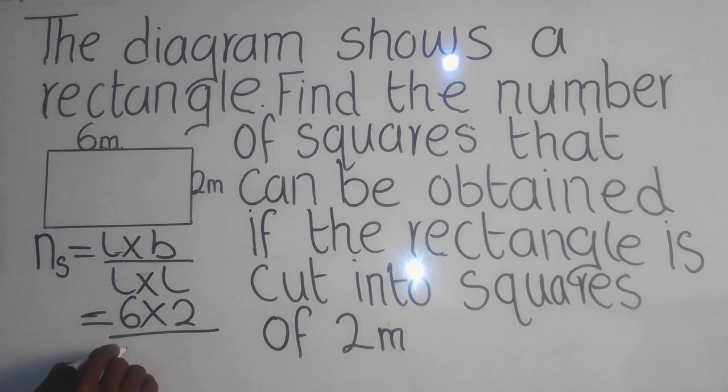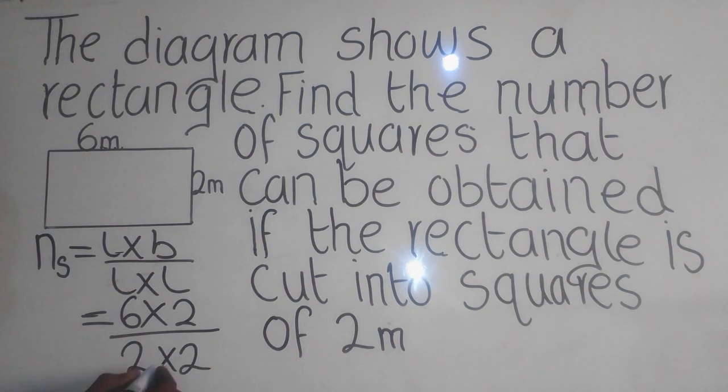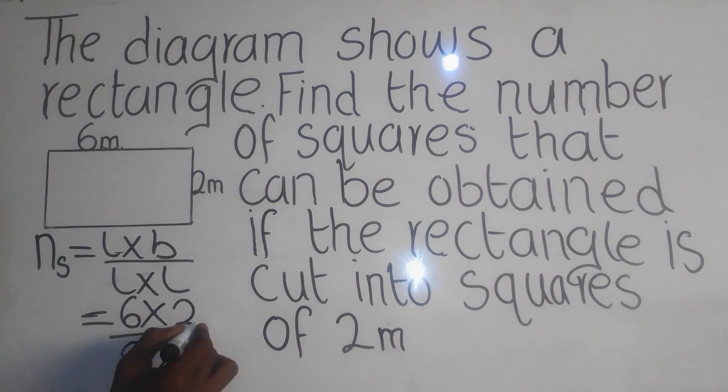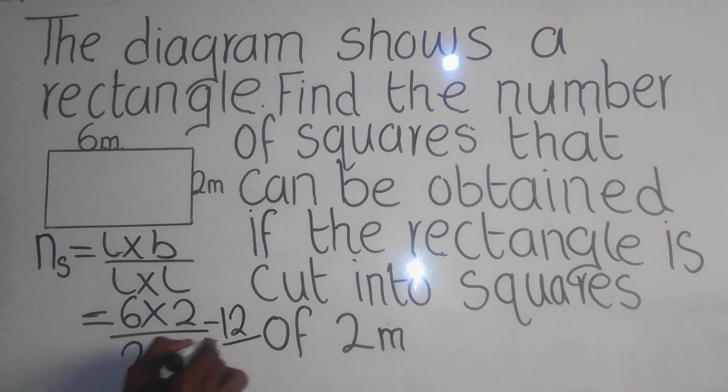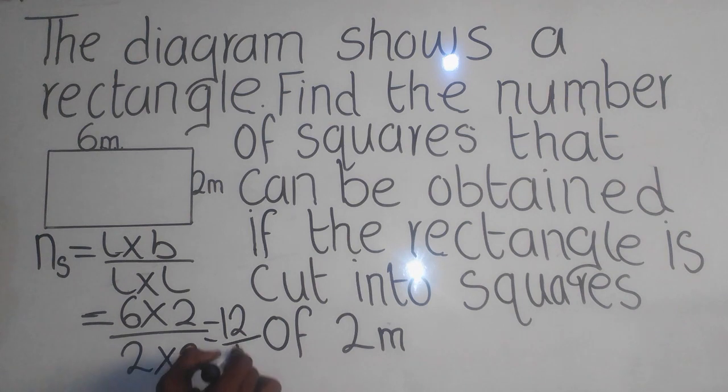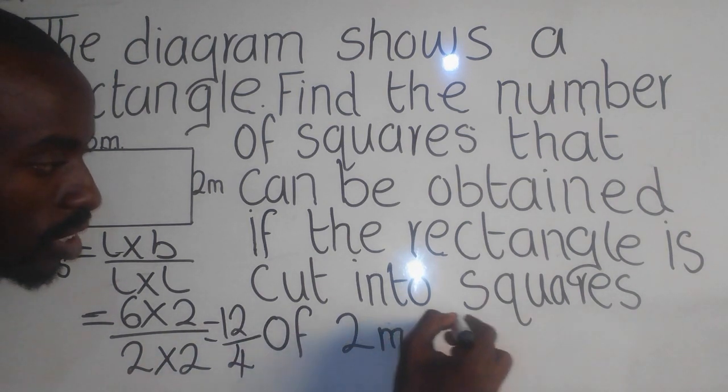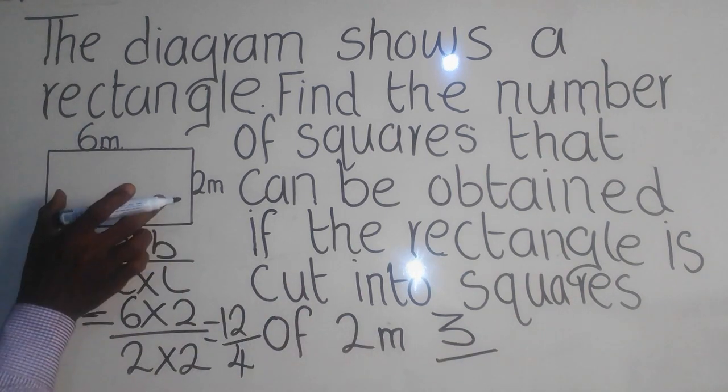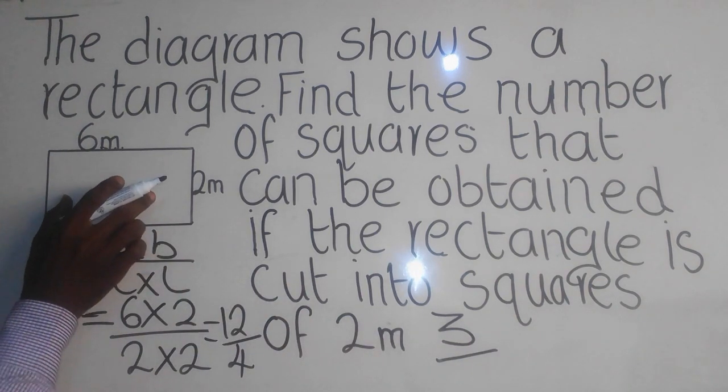You have seen that, yes. So from there now we can simply say six times two is going to give me twelve. Two times two is going to give me four. So four into twelve is going to give me three. So the number of squares in this rectangle is three.